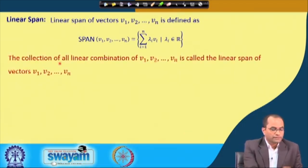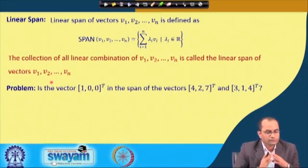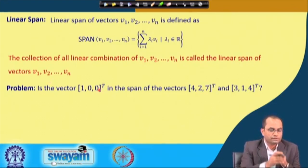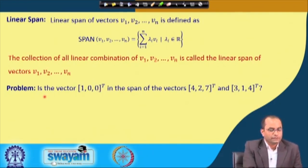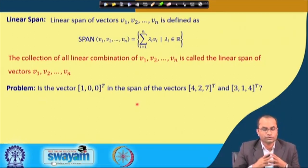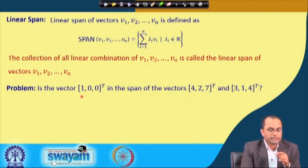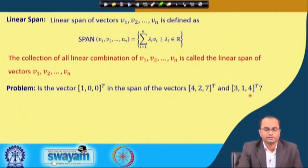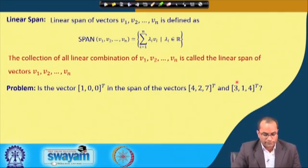The collection of all linear combinations is called the linear span of the vectors v₁, v₂, ..., vₙ. The problem we discuss now: is the vector [1, 0, 0]ᵀ in the span of the vectors [4, 2, 7] and [3, 1, 4]? We need to check whether we can write this vector as a linear combination of these two vectors.